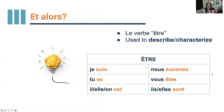Maintenant, révisons le verbe être. On utilise le verbe être pour décrire des personnes, des choses, des endroits — people, places, things. Je suis — I am. Tu es — you are. Il, elle, on est — he, she, one or we is. Nous sommes — we are. Vous êtes — you are, formal or you all are. Ils, elles sont — they are.